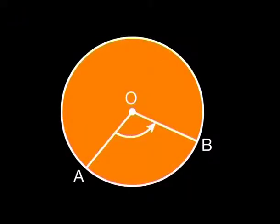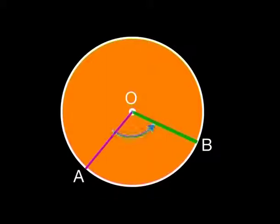What is the angle subtended by an arc at the center of a circle? If we draw a circle with center O and create an angle at the center by drawing lines AO and OB, you can see that angle AOB is subtended by the smaller arc between A and B on the circumference.